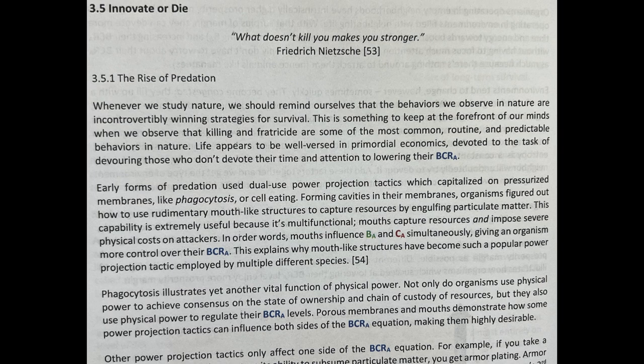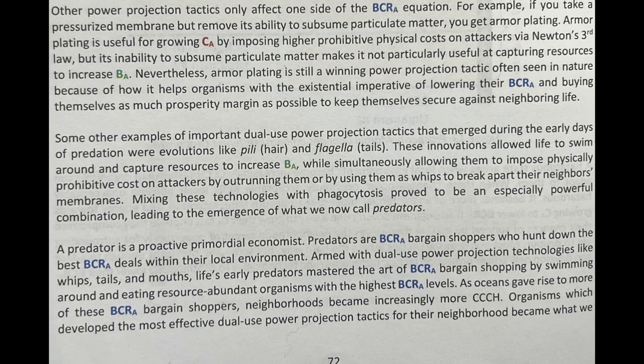Phagocytosis illustrates yet another vital function of physical power. Not only do organisms use physical power to achieve consensus on the state of ownership and chain of custody of resources, but they also use physical power to regulate their BCRA levels. Porous membranes and mouths demonstrate how some power projection tactics can influence both sides of the BCRA equation, making them highly desirable. Other power projection tactics only affect one side of the BCRA equation. For example, if you take a pressurized membrane but remove its ability to subsume particulate matter, you get armored plating.